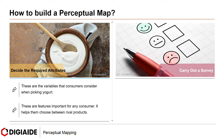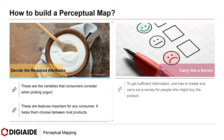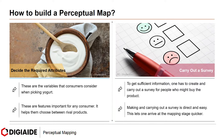Next step: carry out a survey. To get sufficient information, one has to create and carry out a survey for people who might buy the product. Making and carrying out a survey is direct and easy, and this lets one arrive at the mapping stage quicker.